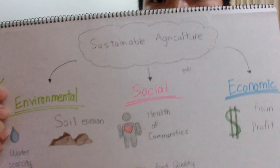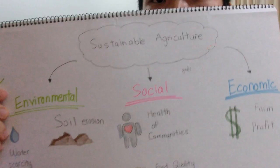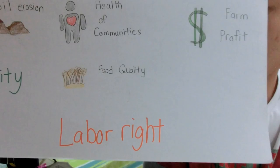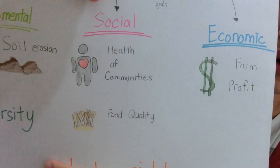For the social dimension, we focus on the health of the community, the food quality, and also labor rights. By ensuring food quality, we will protect the health of the community as well.